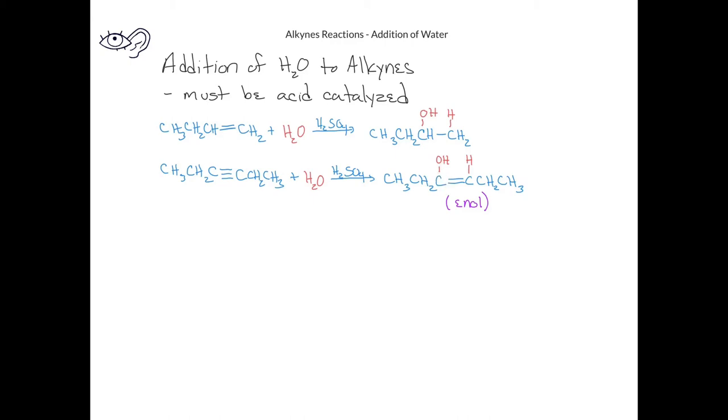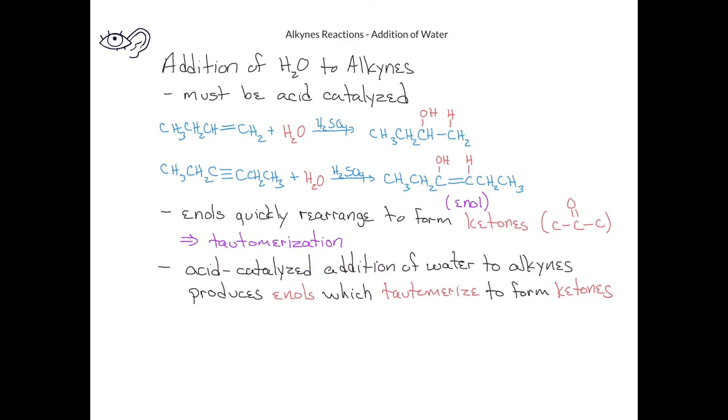Enols will quickly rearrange to form a functional group known as a ketone, which involves a carbon-oxygen double bond. This rearrangement is called tautomerization. Thus, even though the enol is initially formed, the equilibrium favors the ketone tautomer. And so, in this addition of water to an alkyne, we usually indicate that the ketone is the primary product produced.